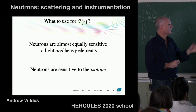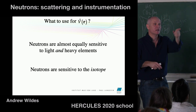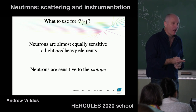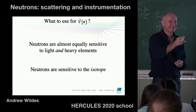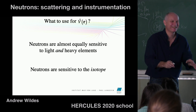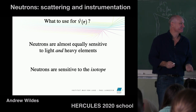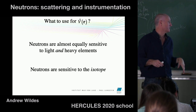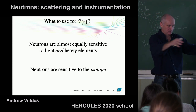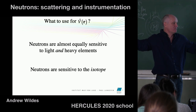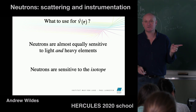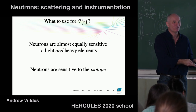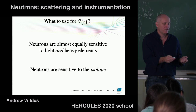So to summarize: neutrons are almost equally sensitive to light and heavy elements, making them very good for compounds with a large distribution of atomic weights. They're also sensitive to isotopes, which you can exploit — isotopically changing a sample that looks chemically identical but appears very different to neutrons. Now we're going to start putting some numbers on.